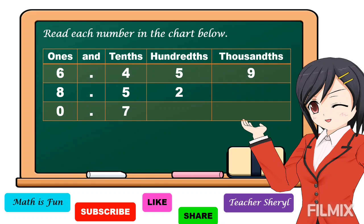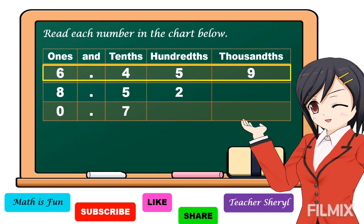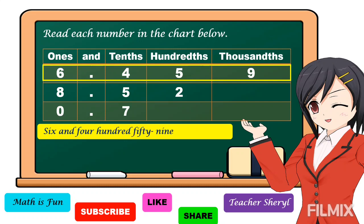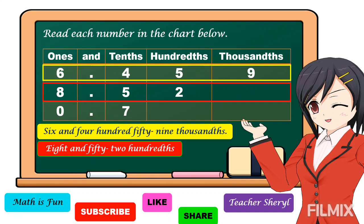For the first example, we read this one as six and 459 thousandths. For the second number, we read this one as eight and 52 hundredths. For the third number, we read this one as seven tenths. If we don't have a whole number, we don't need to read the decimal point — we go directly to the decimal number. Our decimal number is 7 and the place value is tenths, so we read it as seven tenths.